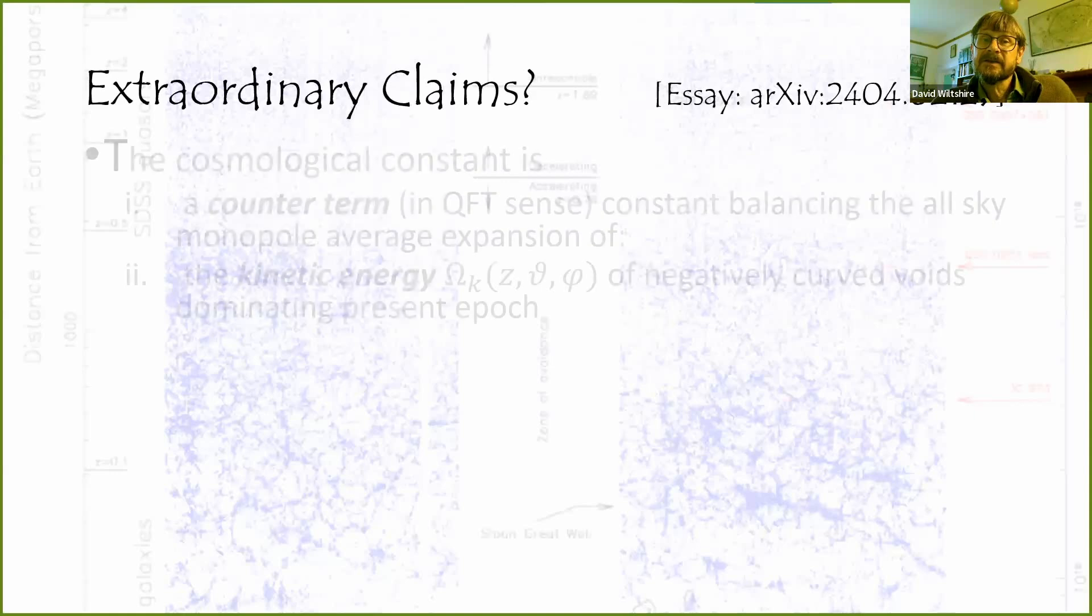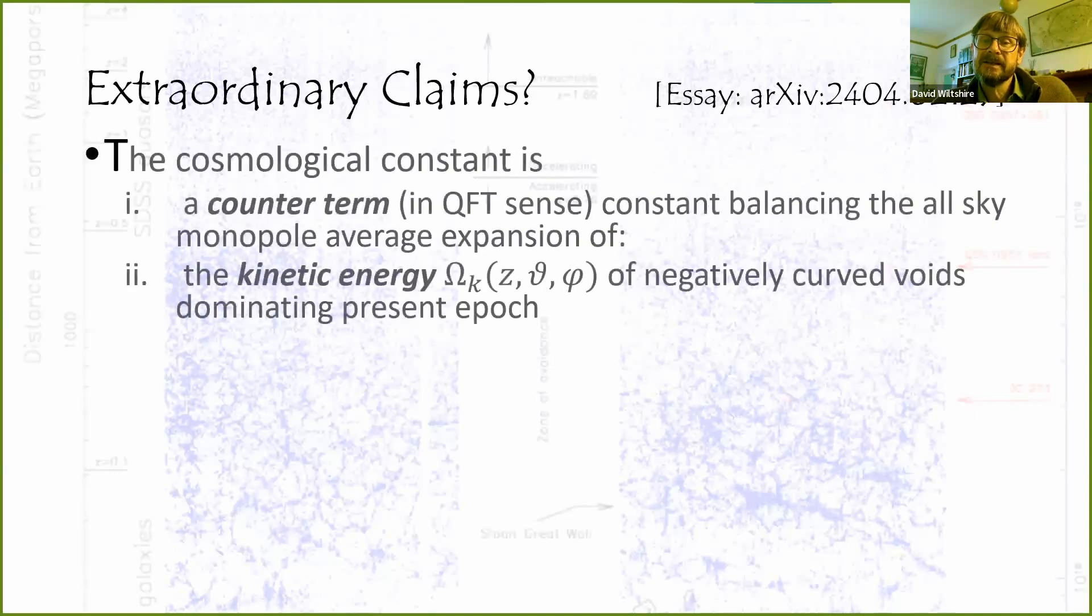I'm going to make an extraordinary claim today and it relates not only to the cosmic coincidence problem which has been lurking in the background as motivation for this approach and for many other approaches in inhomogeneous cosmology, but I'm going to make a claim that I now understand why we put in a cosmological constant.